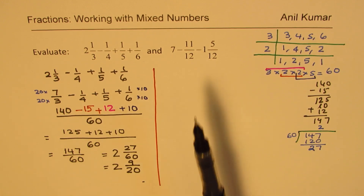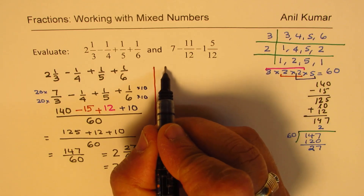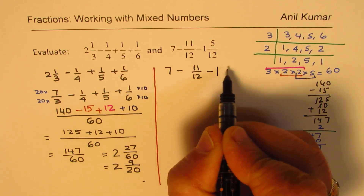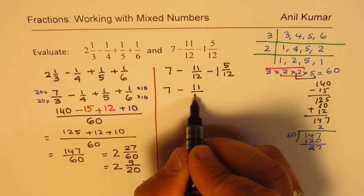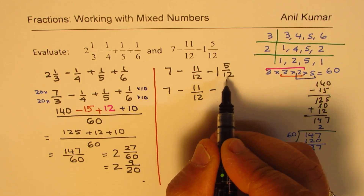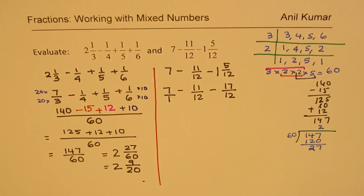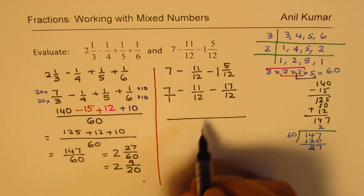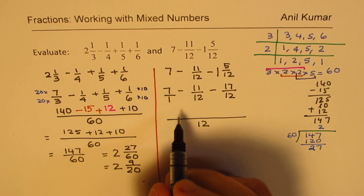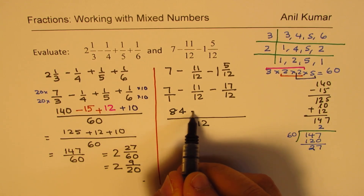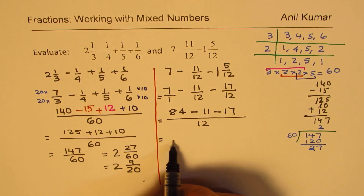Now let's look at the second example: 7 minus 11/12 minus 1⁵⁄₁₂. The first step is to write the mixed number as an improper fraction — 12 plus 5 is 17, so 1⁵⁄₁₂ becomes 17/12. We can treat 7 as 7/1. The common denominator is clearly 12, so we multiply 7 by 12 to get 84/12.